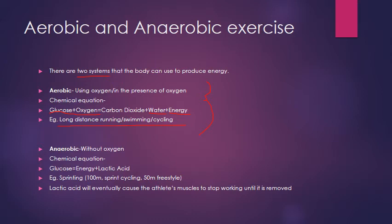Anaerobic exercise is without oxygen — it's key to know that. The chemical equation is simply: glucose → energy + lactic acid. Examples of anaerobic respiration include the 100-metre sprint, sprint cycling, or a 50-metre freestyle swim. These are very short and explosive style activities. Lactic acid, which is produced, will eventually cause an athlete's muscles to stop working until it is removed from those muscles.